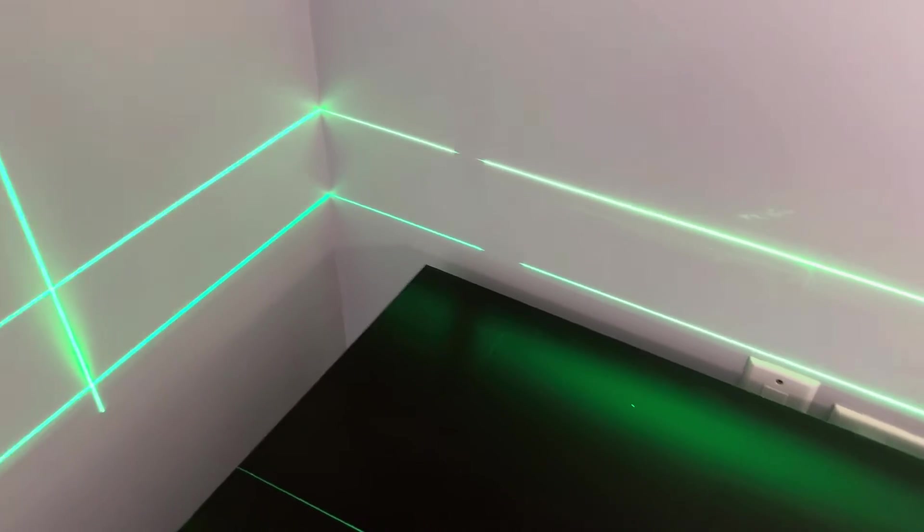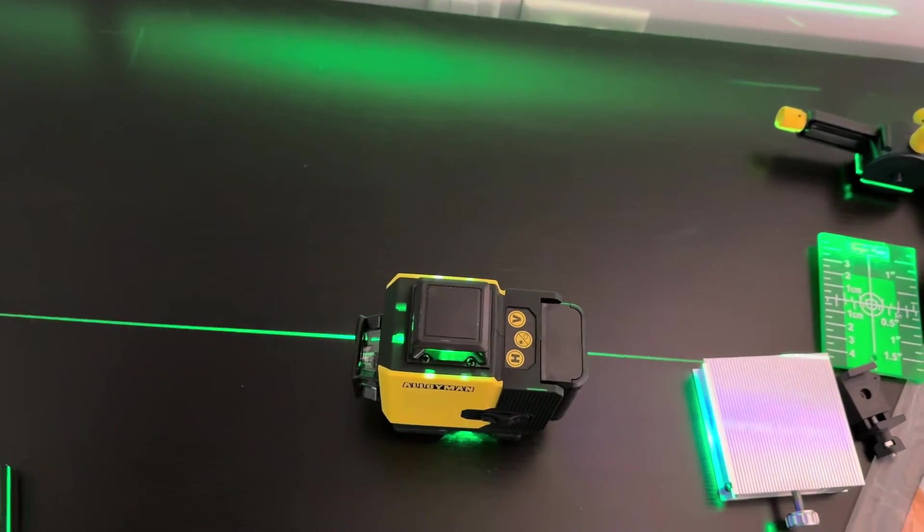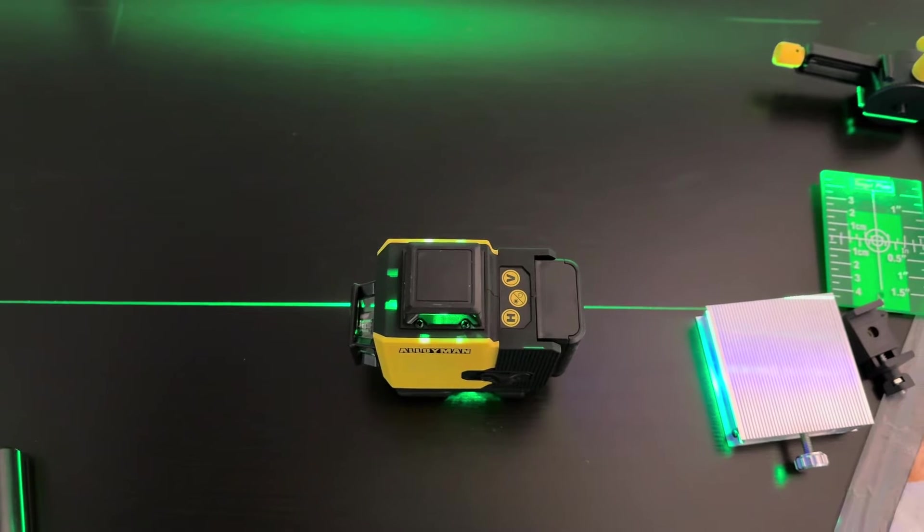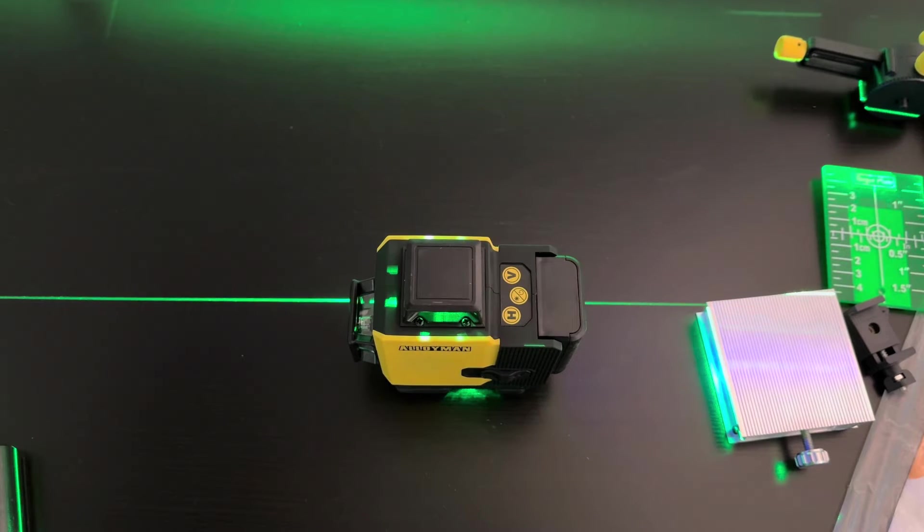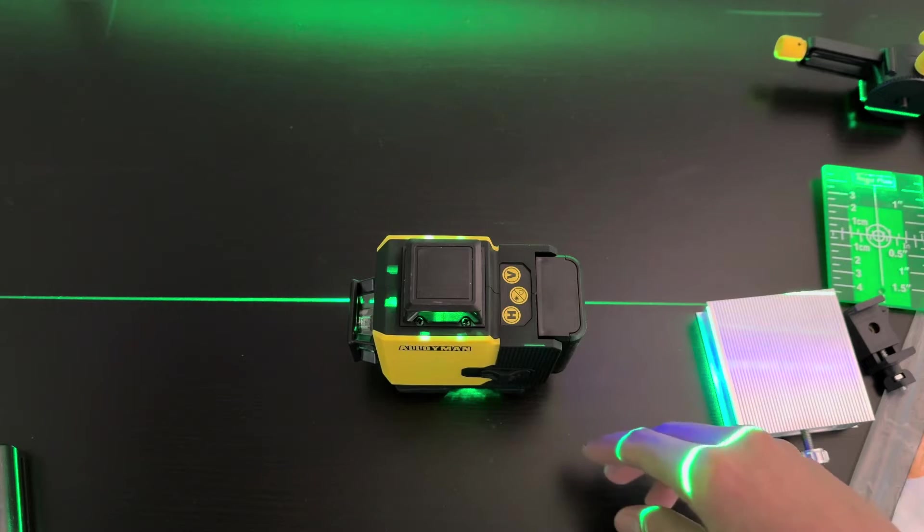As seen here. So this one does come with the green light, which has a better visibility. But let me show you real quick how it looks when I was doing a project downstairs in the basement.